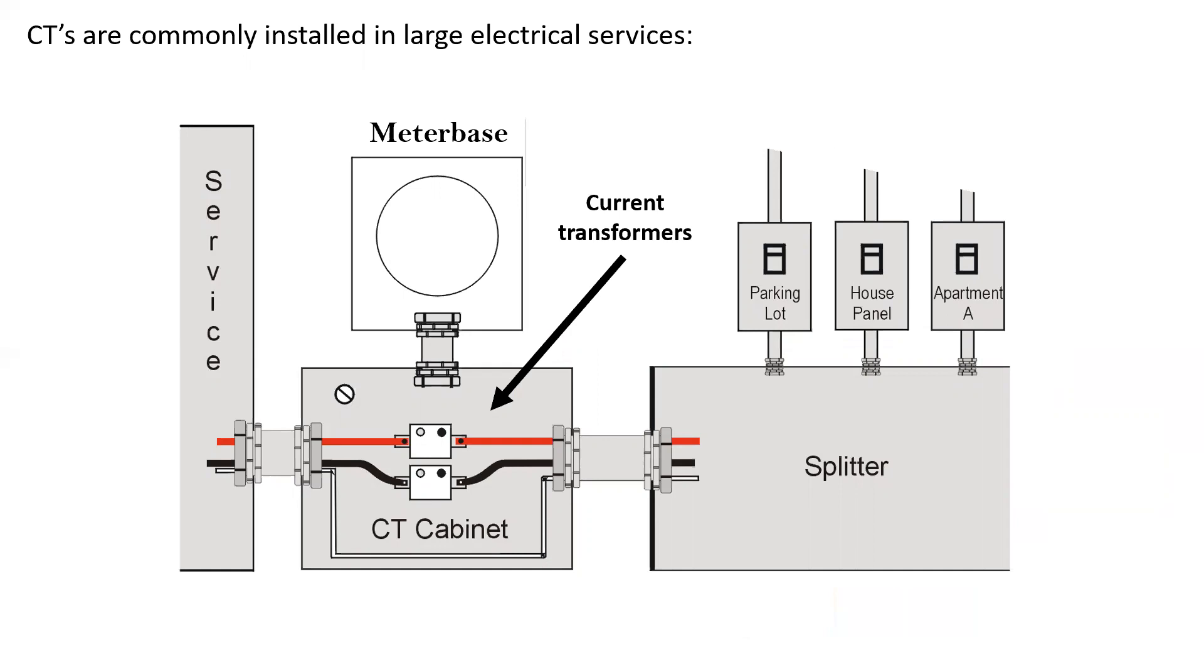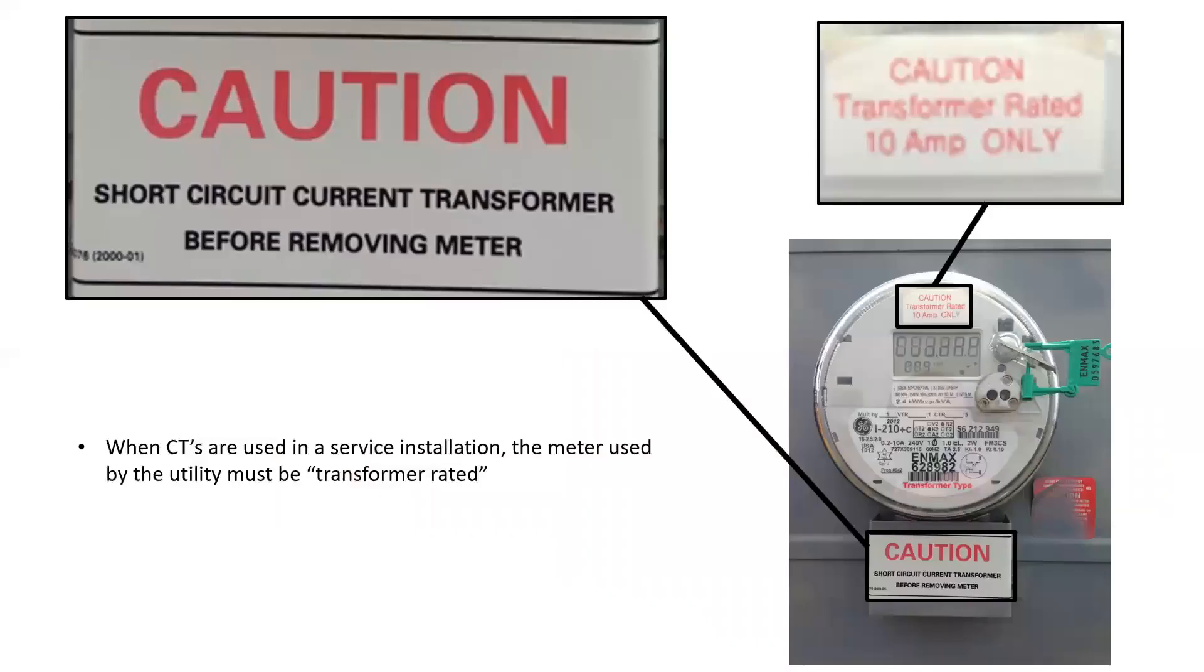So, where do we commonly see these installed? Well, a lot of electrical services will have CTs because the amperage value far exceeds the rating of a standard line value rated meter. So, we have a CT cabinet with CTs inside the cabinet, and then we have conductors that come off of the secondaries and go up into the meter base and connect to the meter itself. Of course, we have to use a different meter. So, this is an example of a transformer rated meter. It says transformer rated 10 amps only, which is much different than the standard meter that you would have in your house that's probably rated to 200 amps. Also connected, states here, short-circuit current transformer before removing meter. So, they don't want someone just pulling the meter off without first short-circuiting the CTs in the CT cabinet.